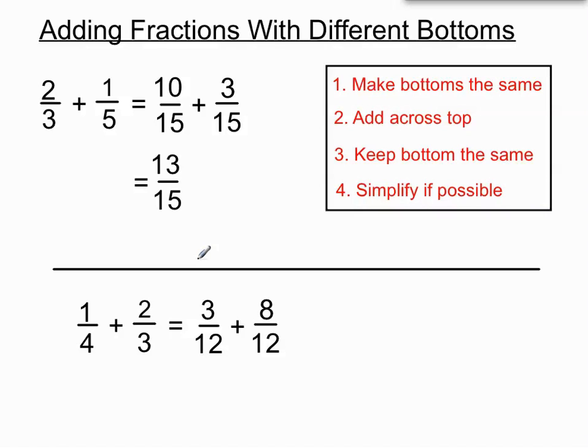So we've turned 1 quarter plus 2 thirds into 3 twelfths plus 8 twelfths. Now they've got the same bottoms, we add across the top. 3 plus 8 is 11, and keep the bottoms the same. And once again, we're lucky because we don't have to simplify it any further. Nothing except for the number 1 goes into 11 and 12, so we don't have to worry about simplifying that any further. Bit trickier. When they've got different bottoms, we've got to make the same bottoms, and then go from there.